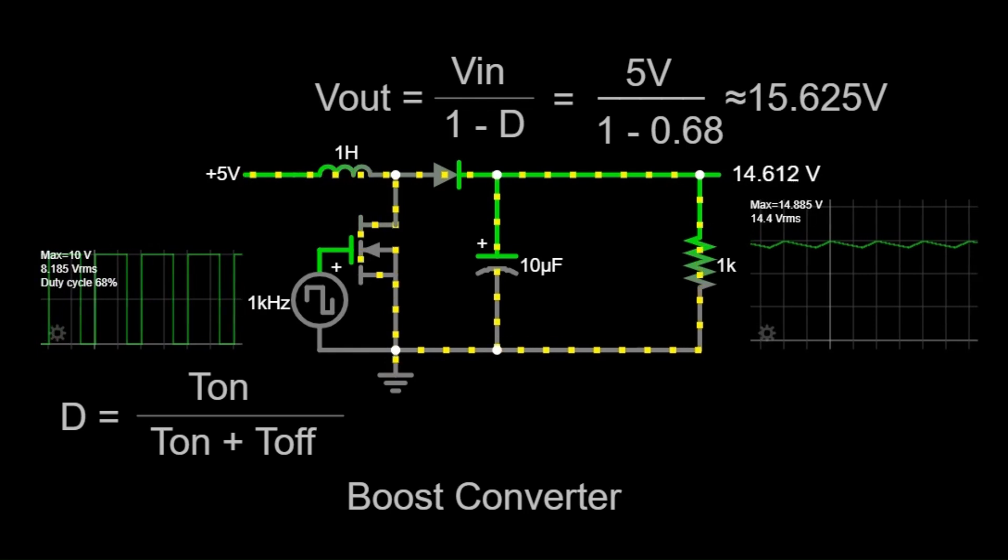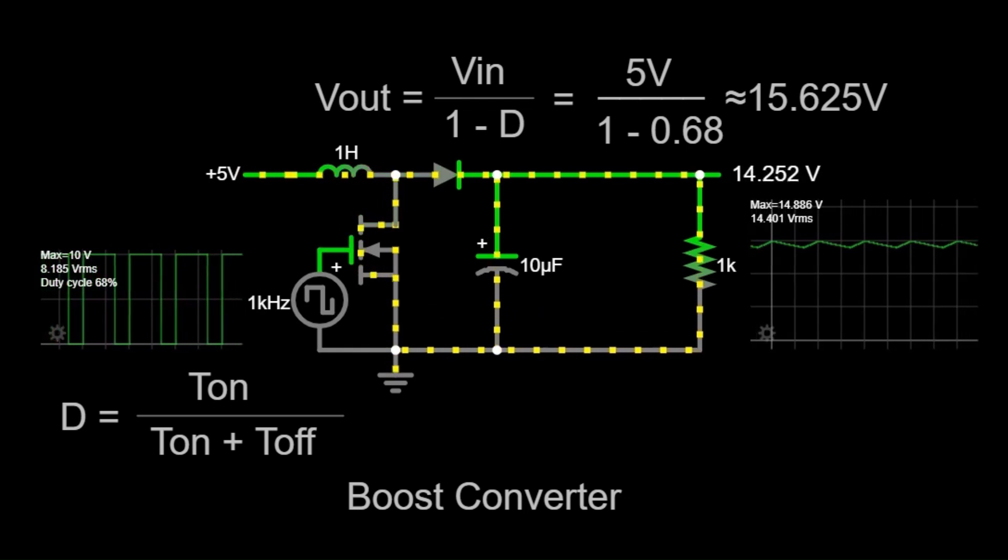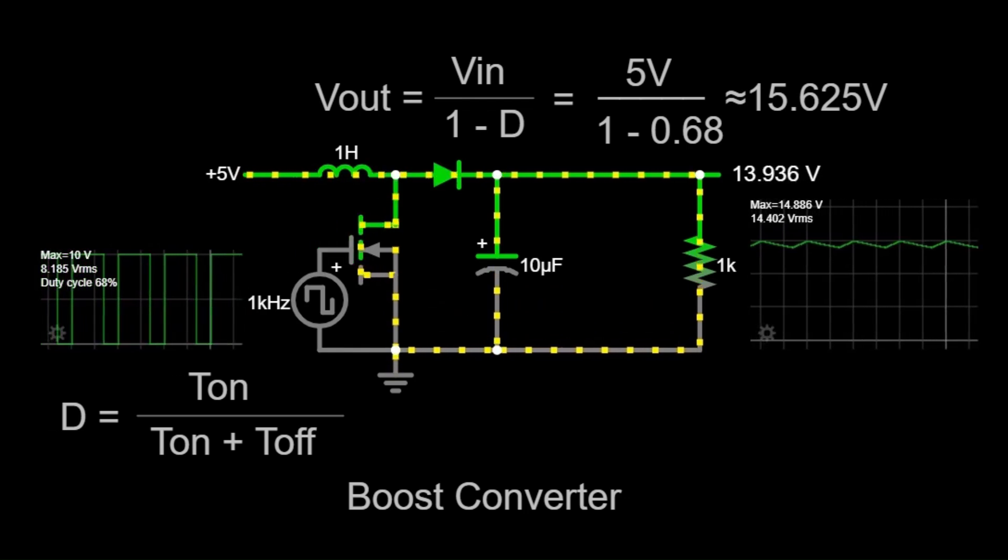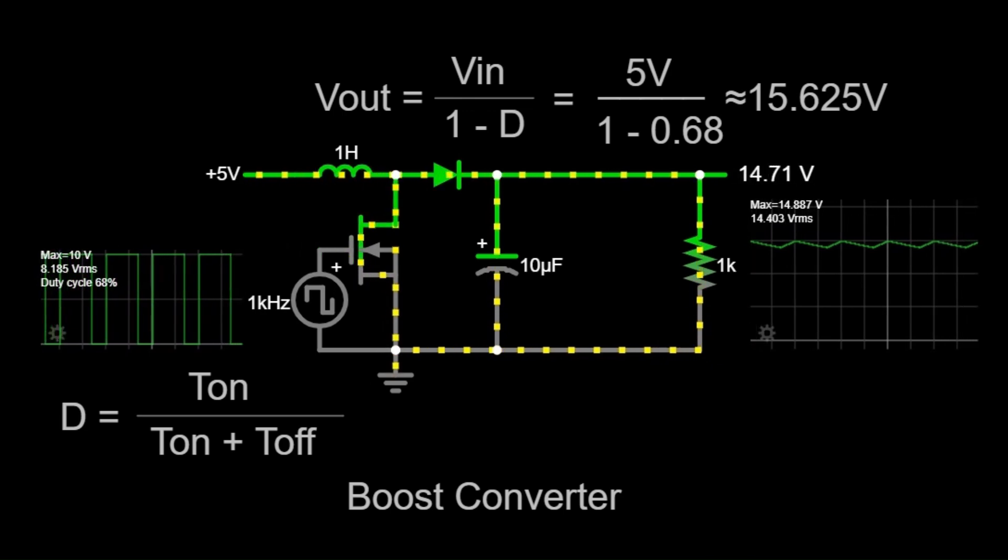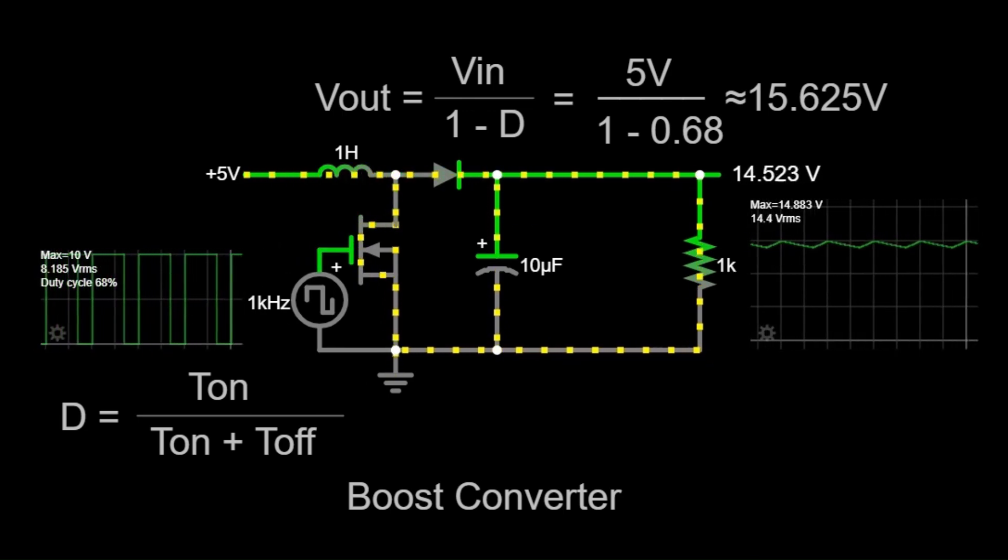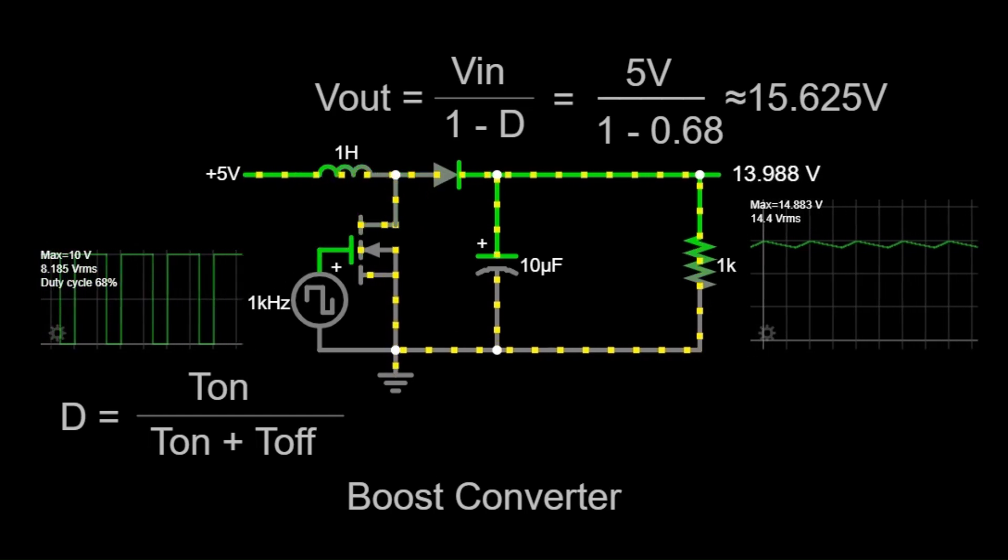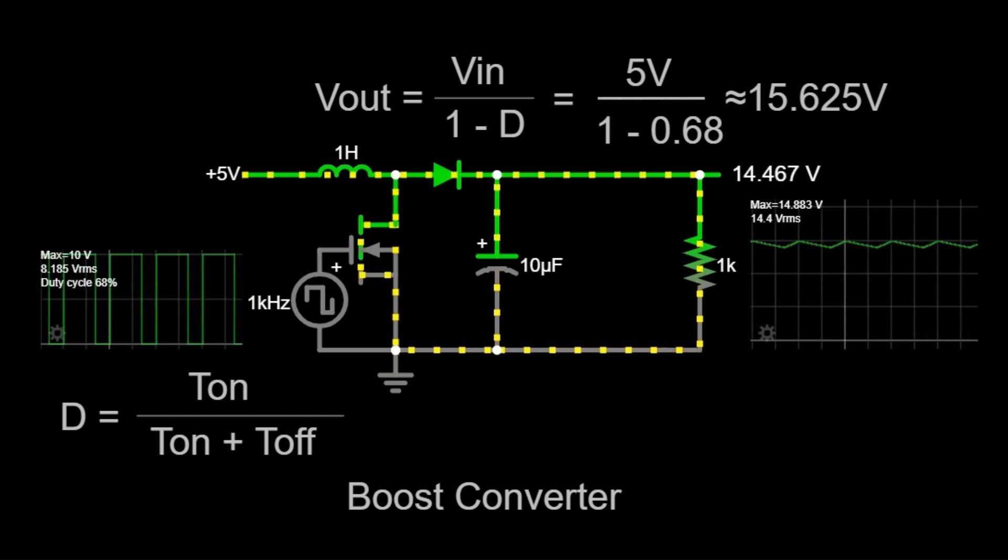Now let's break down the components and operation of a boost converter. Take a look at this diagram. You can see four main components: an inductor, a switch, a diode, and a capacitor. Let's discuss each one in detail.